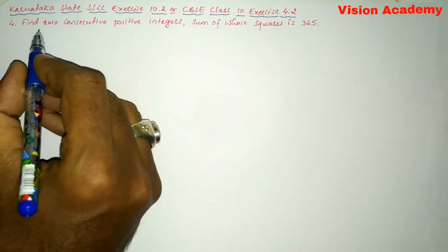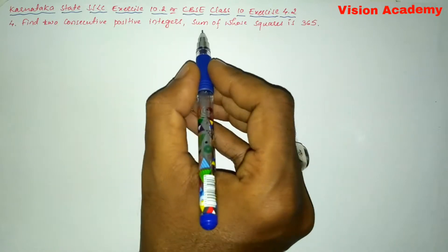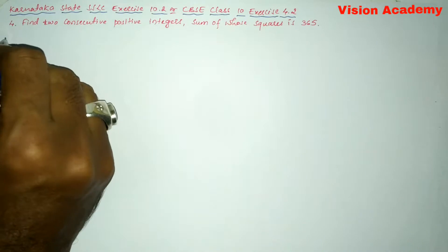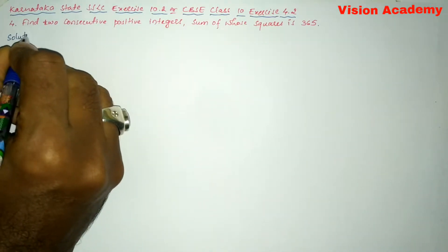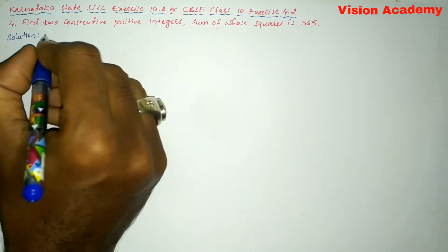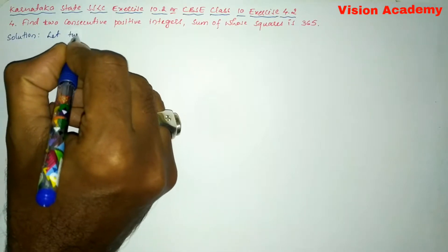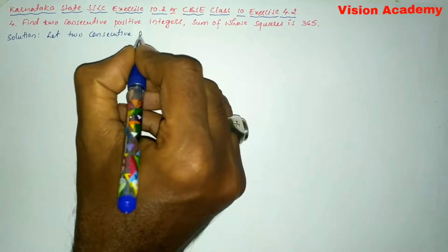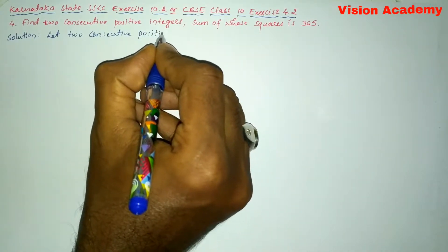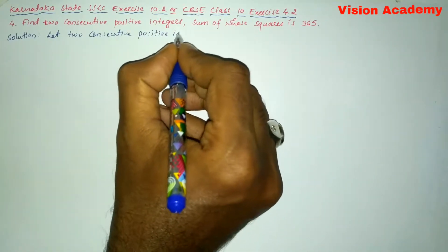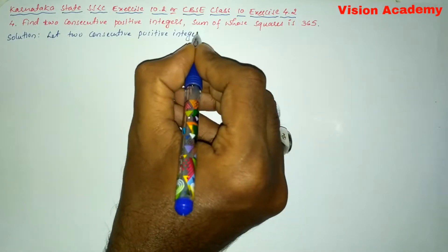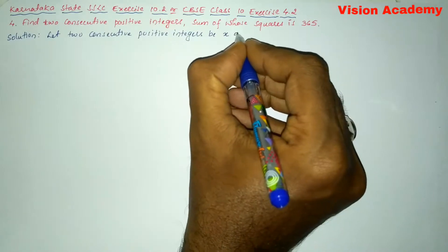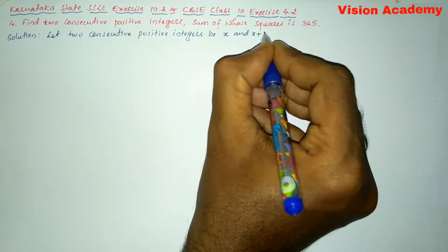Question number four: find two consecutive positive integers, the sum of whose squares is 365. Let two consecutive positive integers be x and x plus one.